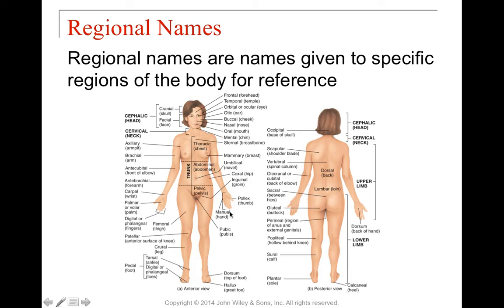The cephalic region is the head — cephalus means head, as in hydrocephalus (water in the brain) or anencephaly (missing brain). It includes the cranium and facial region: the frontal region (forehead), temporal region (temple), ocular or orbital region (around the eye), otic (ear), buccal (cheek), nasal (nose), oral (mouth), and mental (chin). The cervical region includes the cervical vertebrae.